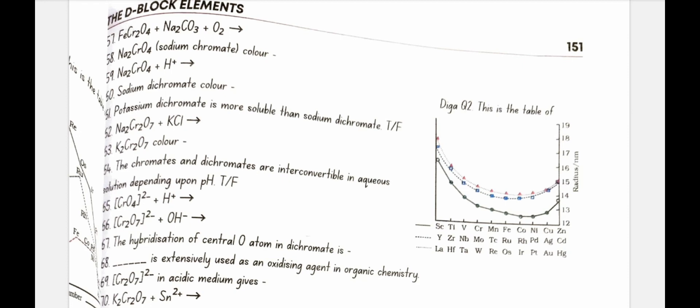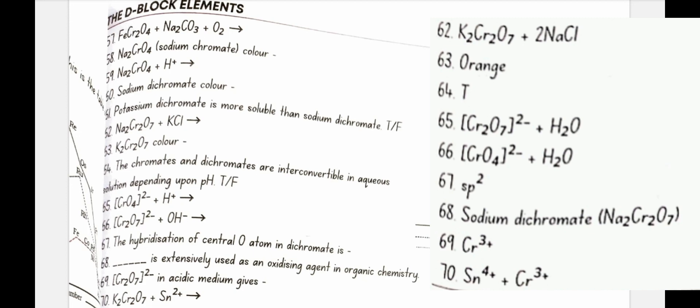Potassium dichromate is more soluble than sodium dichromate. No, false. Na2Cr2O7 plus KCl gives K2Cr2O7 plus 2NaCl. K2Cr2O7 color is orange.